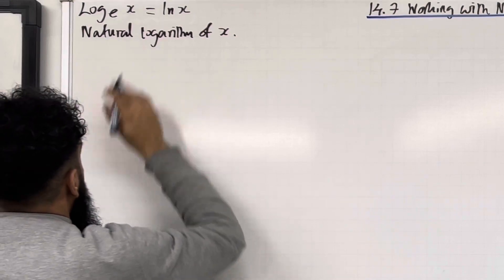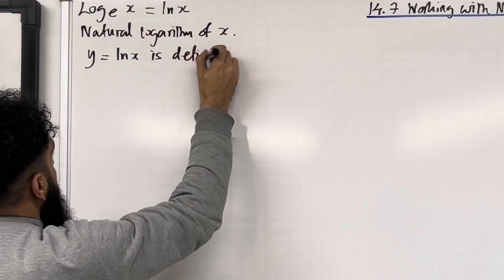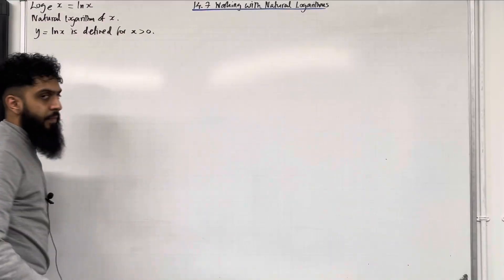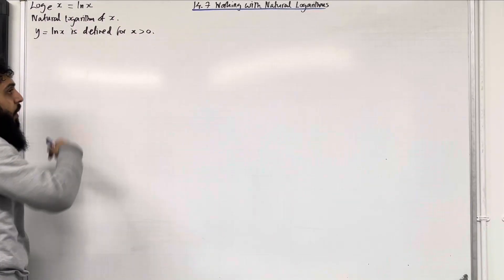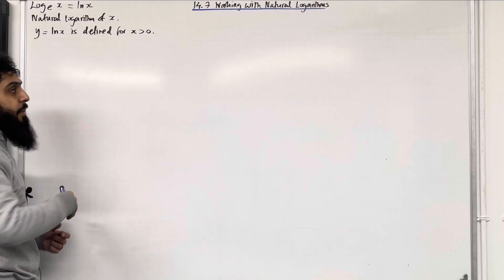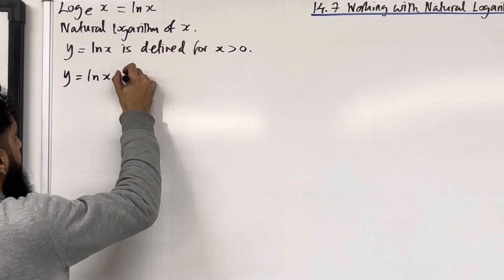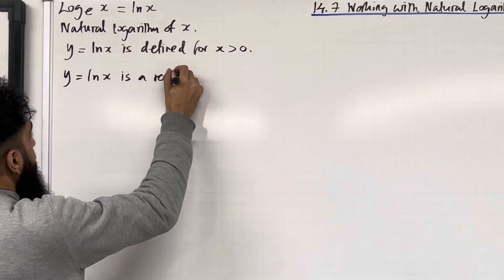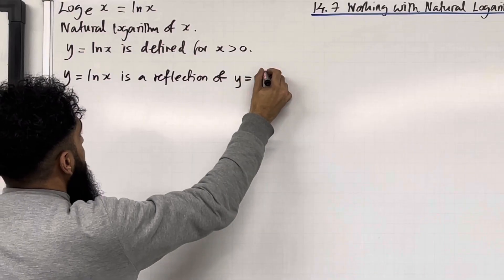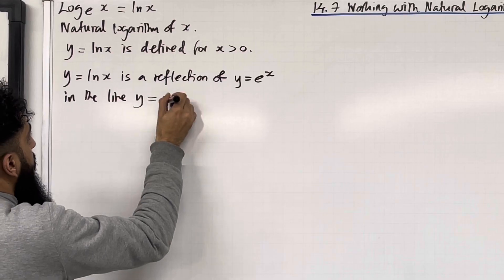y = ln x is defined for x greater than 0. So if you were to substitute x = 0 or x equal a negative number into this equation, you will get a maths error. y = ln x is a reflection of y = e^x in the line y = x.